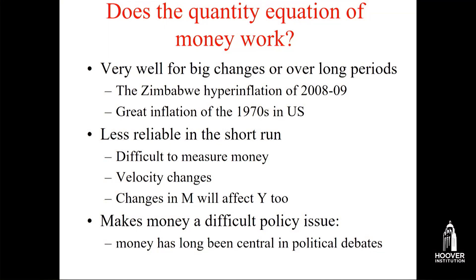It's hard to make the quantity equation work in all cases. In Zimbabwe it worked just fine — money growth was increasing a lot as they tried to finance spending. We also had very high inflation in the 1970s in the US, sometimes called the Great Inflation, and it worked very well then. But it's less reliable in the short run, especially when inflation is low or you're looking at just a year or two. If the Fed increases money growth right away, the economy will probably boom for a while and inflation comes later, which makes monetary policy a very difficult political issue.